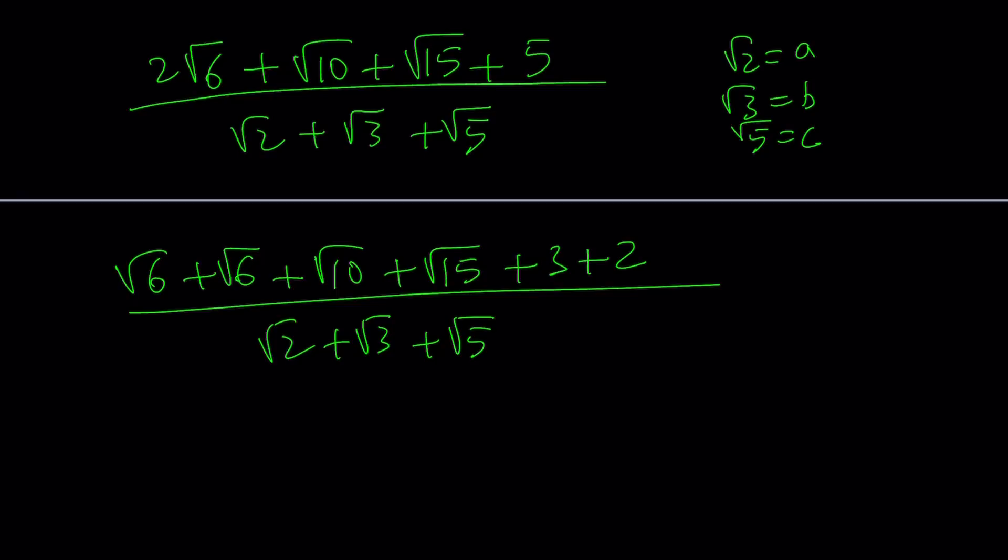For example, square root of 6 can be written as root 3 times root 2. Same thing here. And then root 10 can be written as root 2 times root 5. Root 15 can be written as root 3 times root 5. 3 can be written as root 3 times itself, and root 2 times root 2.